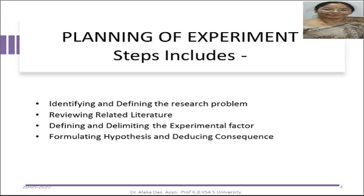The next step is to review the related literature, which helps the researcher to know whether the selected topic is significant enough, whether the topic is feasible for conducting the experiment, and also it helps in delimiting the scope of the problem to a needed area of inquiry. Next is defining and delimiting the experimental factor. Experimental research is that in which one single variable — the treatment variable or experimental variable — is administered to the treatment group and its influence is observed on the dependent variable. Therefore, the investigator has to be clearly specific regarding the theoretical framework of the experimental factor or treatment variable.